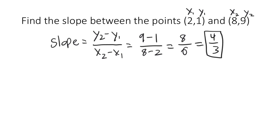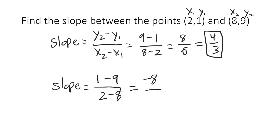It's worth noting here that the order doesn't really matter. We started with 9 and 8 in our calculation, but we could have just as easily started with 1 and 2 as long as we're consistent. For example, 1 minus 9 over 2 minus 8 gives negative 8 over negative 6, and the two negatives cancel off, leaving 4 over 3 again. So the order doesn't really matter as long as you're consistent — if you start with 9 in the top of the fraction, then you have to start with 8 in the bottom, and vice versa.